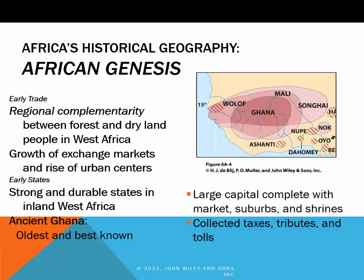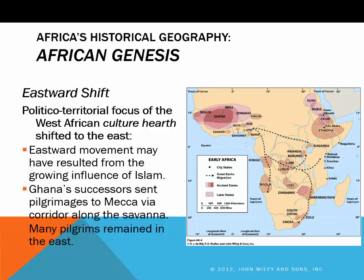West Africa was the source of a great deal of early trade. Since there is a contrast in environments and modes of life, we see the rise of regional complementarity between peoples within this continent and the rise of markets and urban centers such as Timbuktu. Ancient Ghana was one of the states that arose between the 9th and 12th centuries AD, and included a large capital city, suburbs, and religious shrines, before the Muslims invaded in 1067 and eventually broke it into smaller units. Eventually the politico-territorial focus of the West African culture hearth shifted to the east, perhaps in part due to the rise of Islam.